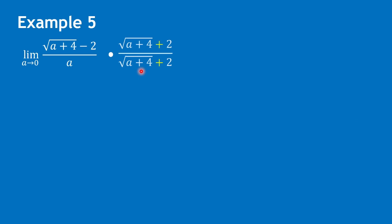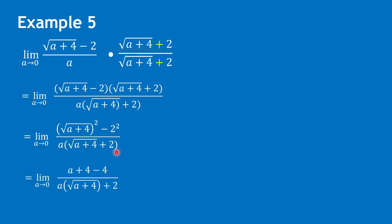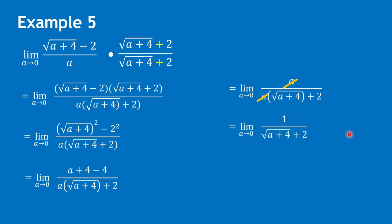We multiply by the conjugate of the numerator: the square root of a plus 4 plus 2 over the square root of a plus 4 plus 2. The numerator shows the sum and difference of two binomials, so using special products we get the square of the square root of a plus 4 minus 2 squared, all over a times the square root of a plus 4 plus 2. Simplifying the numerator gives a plus 4 minus 4, which equals a. We can cancel a, giving us 1 over the square root of a plus 4 plus 2.